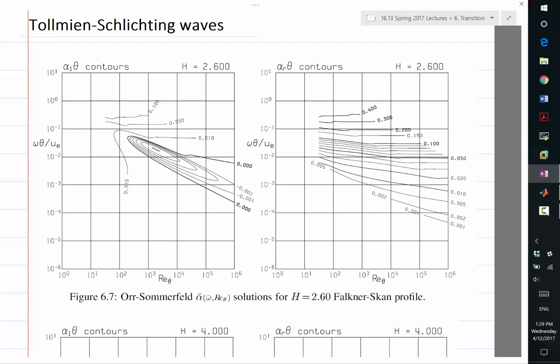More importantly, how fast do they grow or decay? For example, for a flat plate boundary layer H=2.6, we identified only a narrow region in which the waves can grow. If you have an even smaller H, the region for growth is even smaller and it happens at even higher Re_theta.